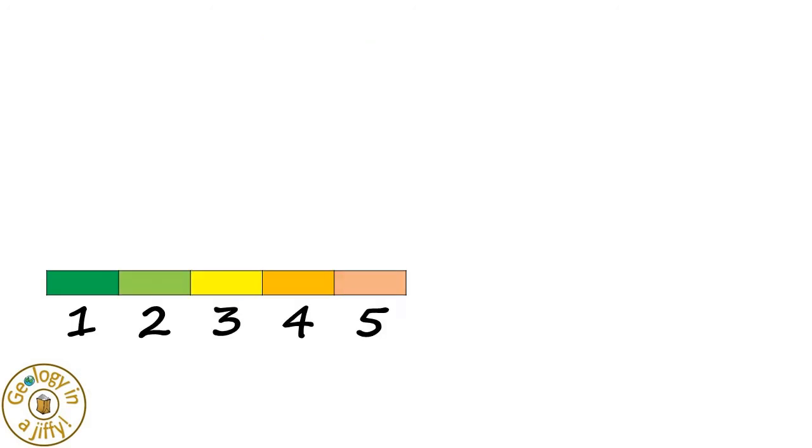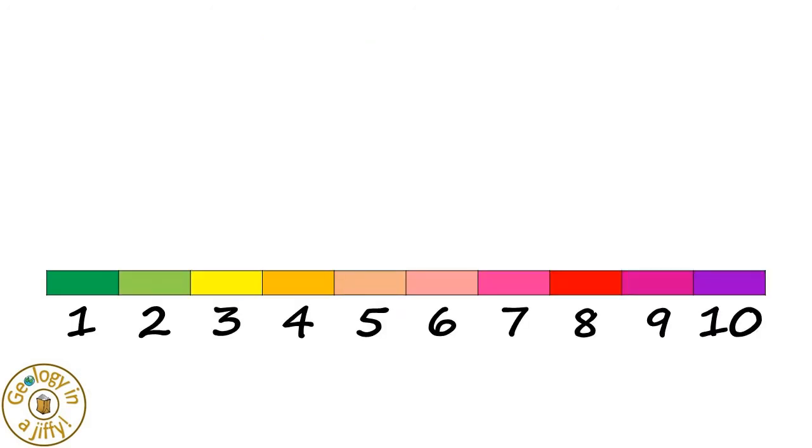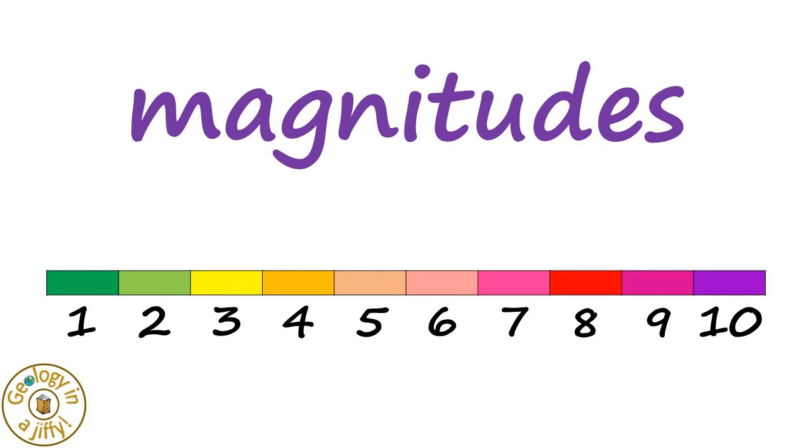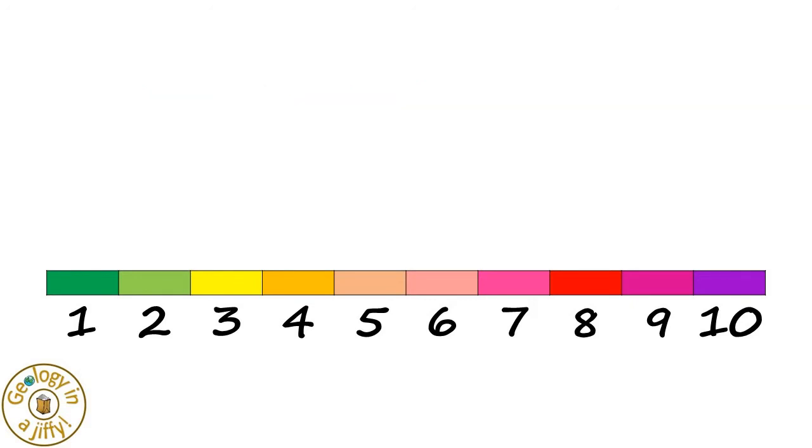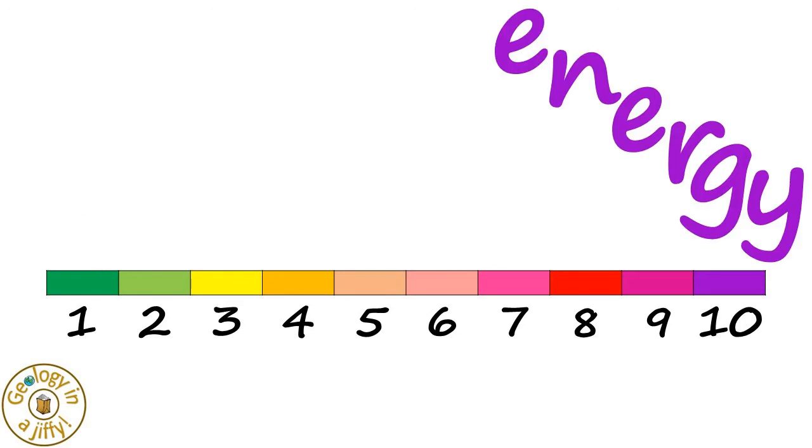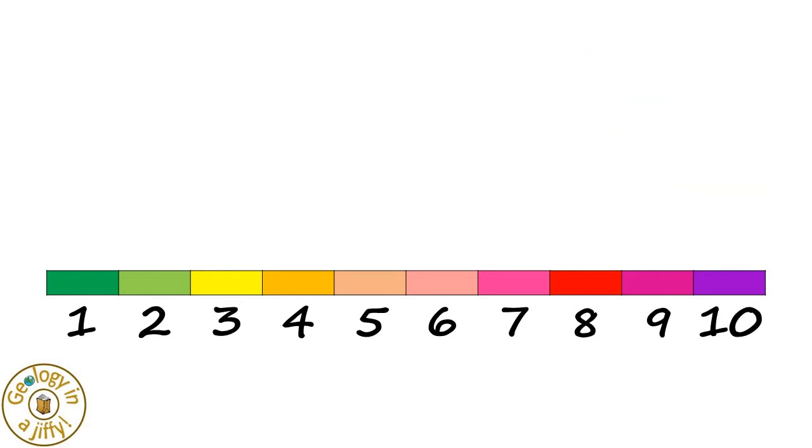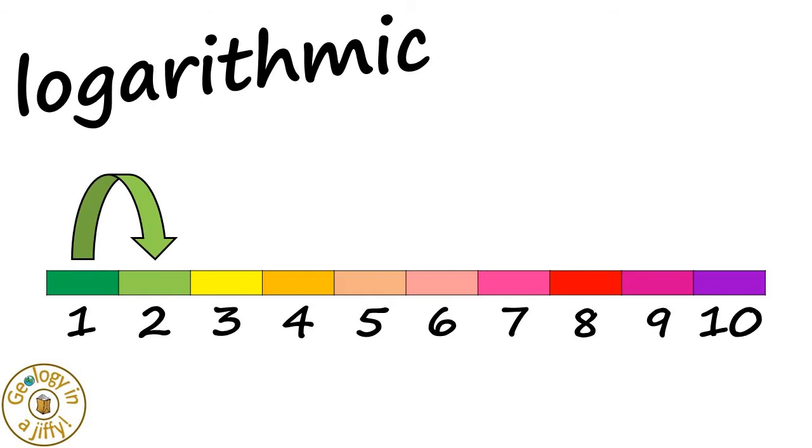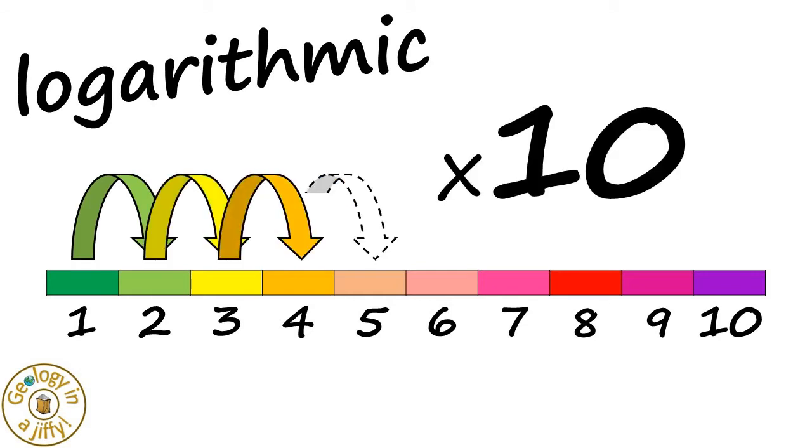Richter ranked his scale from 1 all the way through to 10 and called them magnitudes, with magnitude 1 having the least energy and magnitude 10 having the most energy. Richter's scale is logarithmic, which means that every time you move up a magnitude, there is a tenfold increase in amplitude.